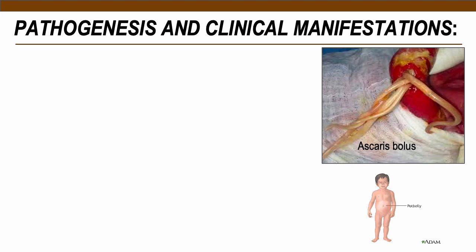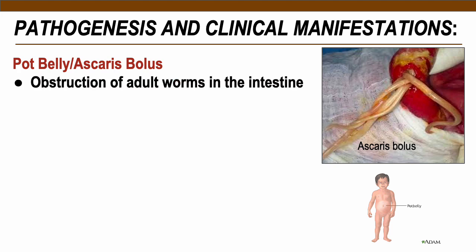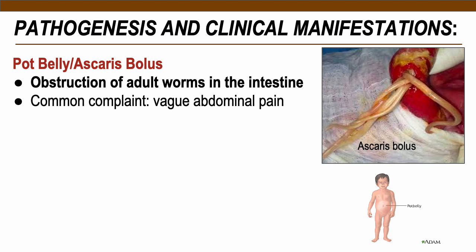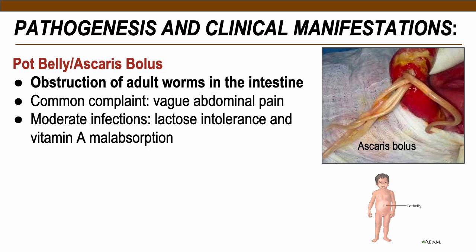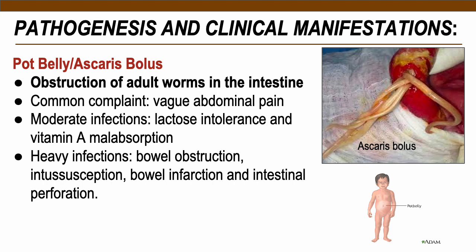Intestinal Ascariasis — including potbelly and Ascaris bolus — is due to obstruction of adult worms in the intestine. The most common complaint is vague abdominal pain. Moderate infection predisposes patients to lactose intolerance and vitamin A malabsorption. Heavy infections are associated with Ascaris bolus, intussusception, bowel infarction, and intestinal perforation — where ulcers or wounds form in the intestinal wall from constant biting or pricking by Ascaris worms.